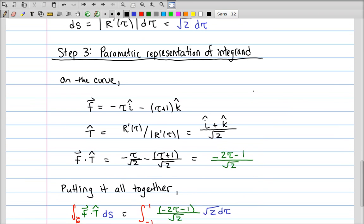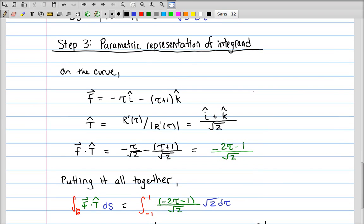Step 3 is to construct a parametric representation of the integrand. So on the curve, minus xi minus yj minus zk becomes minus tau i minus tau plus 1 times k, because there's no y component in the curve.